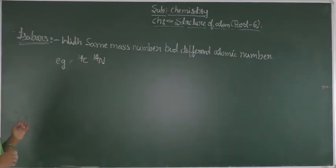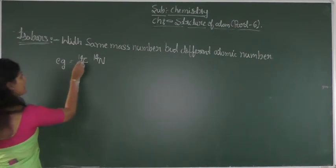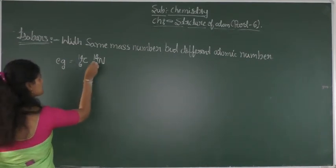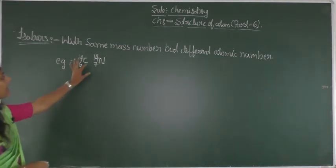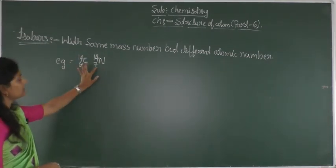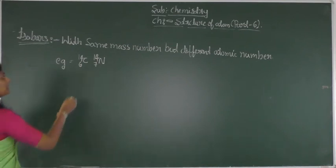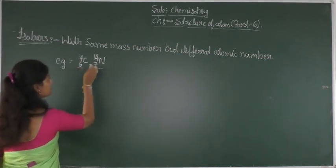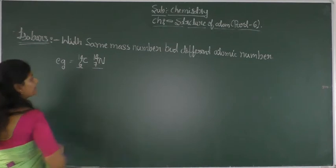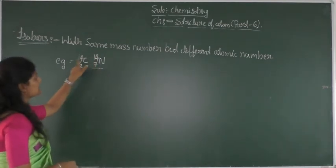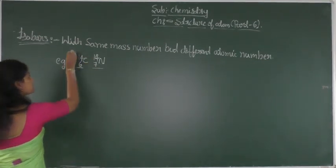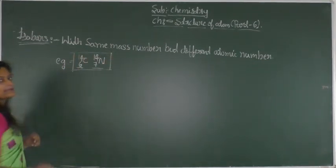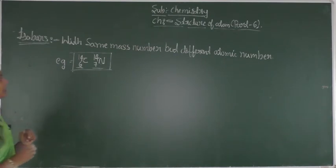Here the example for isobars: carbon-14 and nitrogen-14 are examples of isobars. Carbon has atomic number 6 and nitrogen has atomic number 7, so the atomic numbers are different. But the mass number of both elements is 14 — the same. Such species are called isobars.